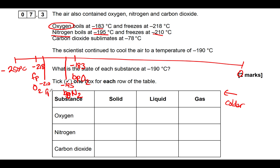Finally, we've got carbon dioxide, which sublimates at minus 78°C. Sublimation is going straight from a gas to a solid. Minus 78 is a lot warmer than these other temperatures, so I'm going to put that over there — minus 78.